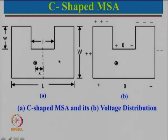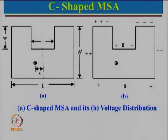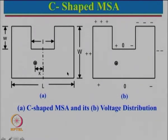We came up with a simple one-line formula. If the slot depth is not very large, we take the average of the straight length and the longer path length, set it equal to lambda by 2, and find the resonance frequency. If the depth is very large, the effective length is the average of the two paths going around the slot, equated to lambda by 2.